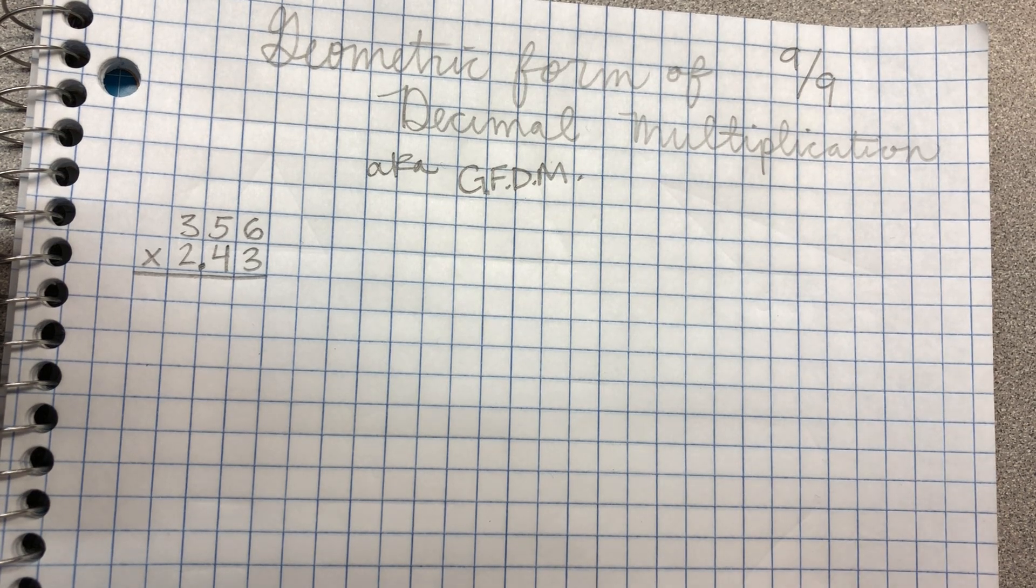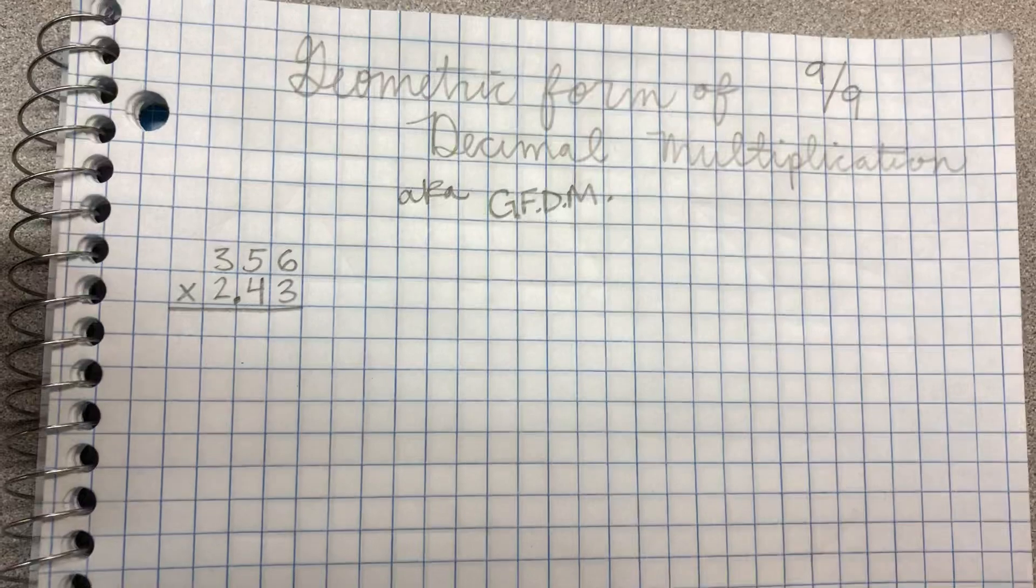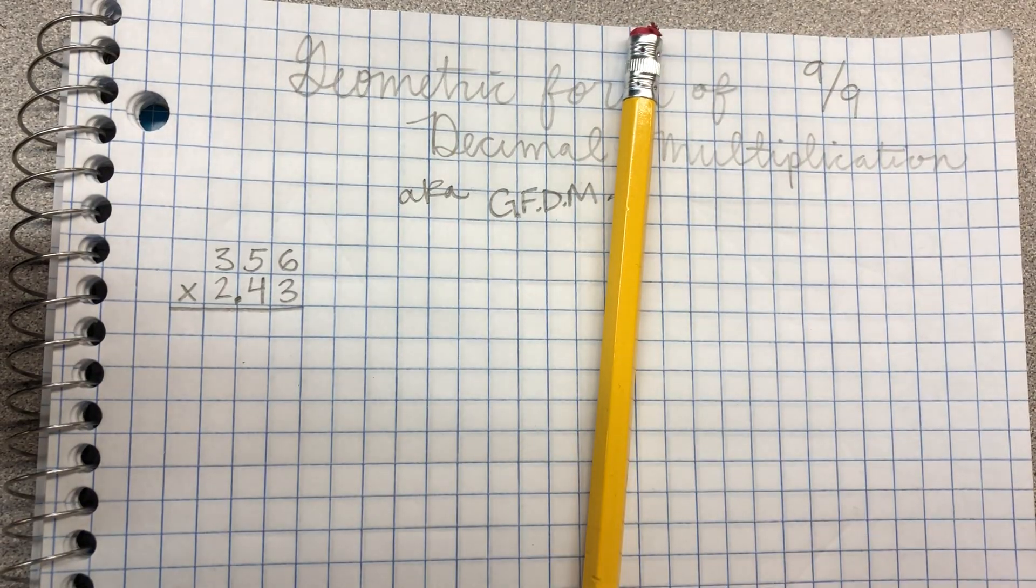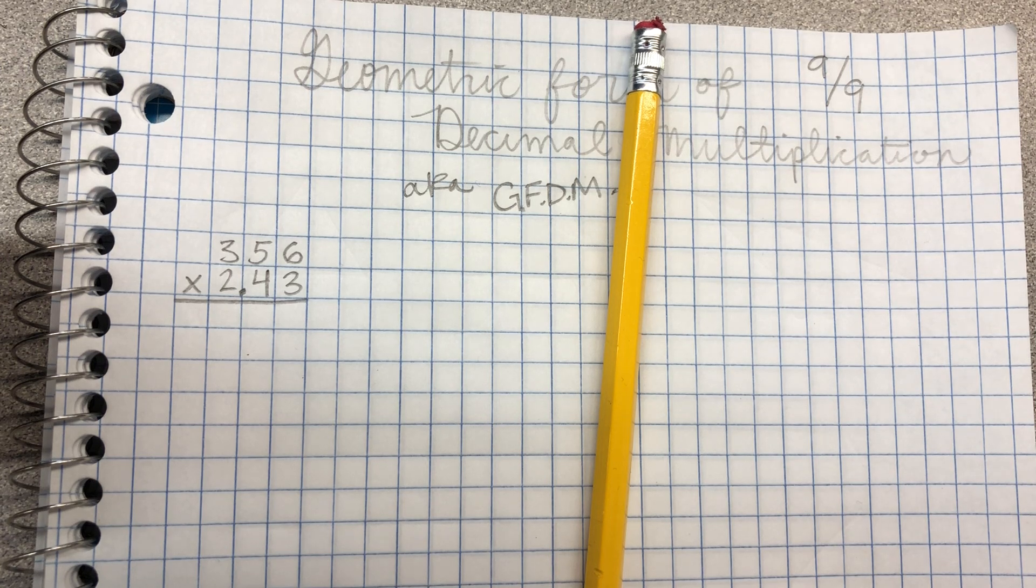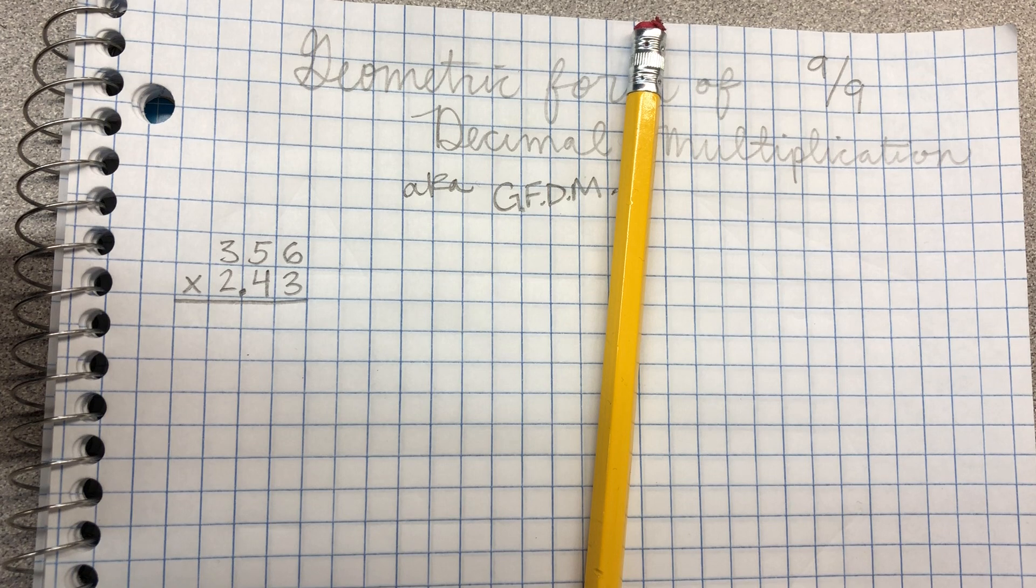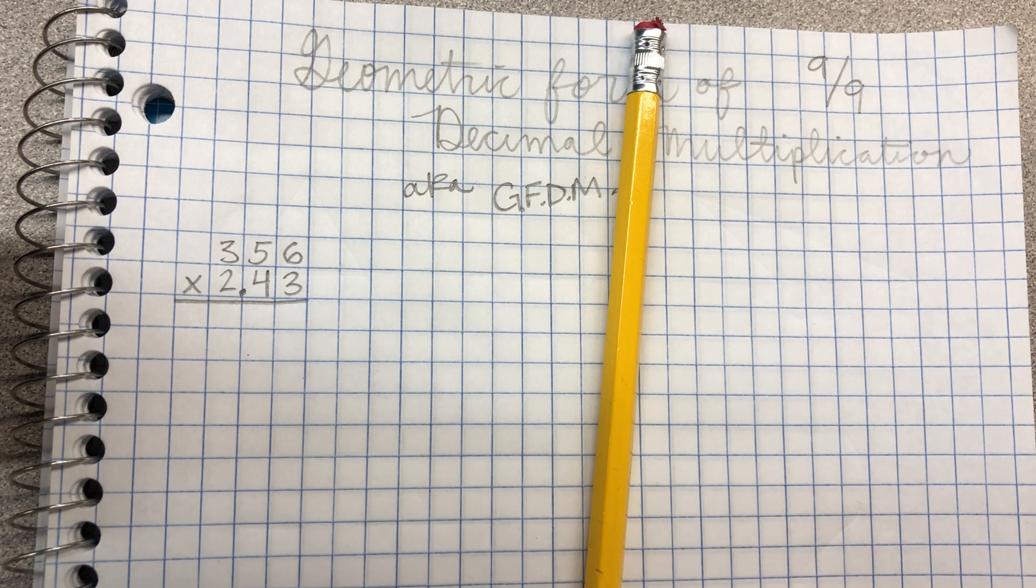So what you'll need today is your graph paper notebook, a pencil, a ruler. If you don't have a ruler you can use a notebook or other thing for a straight edge.